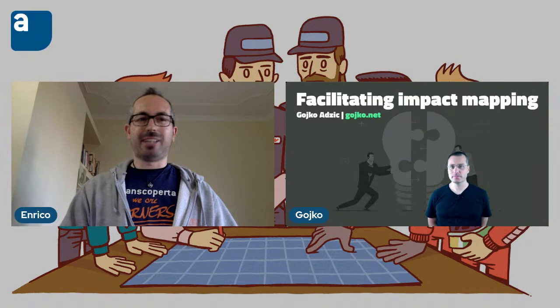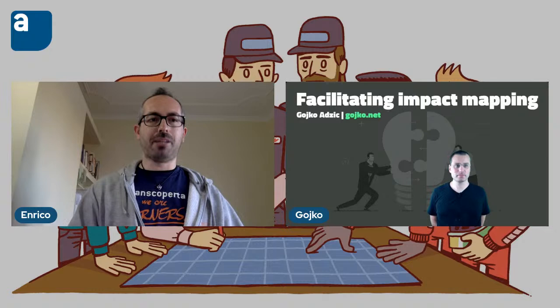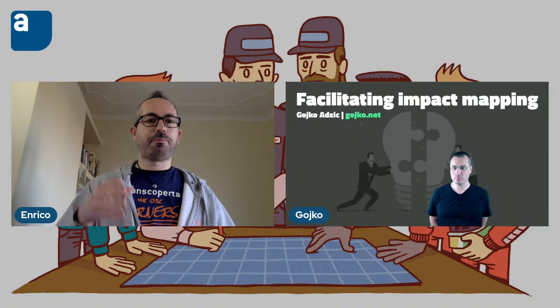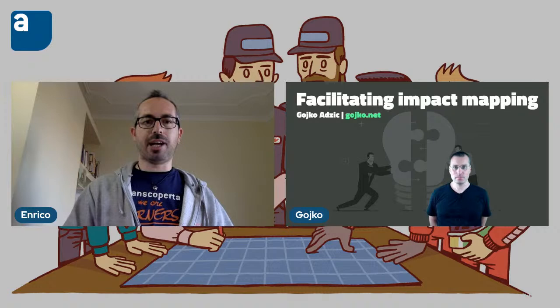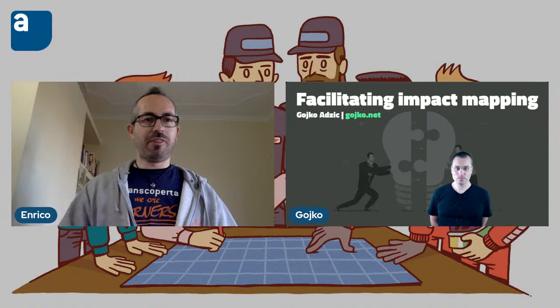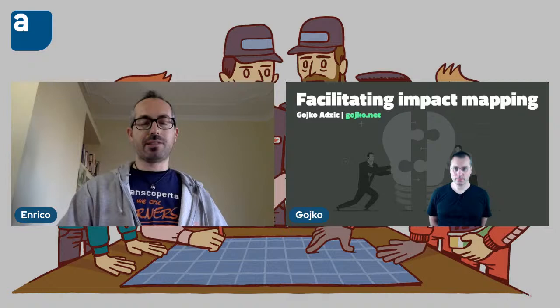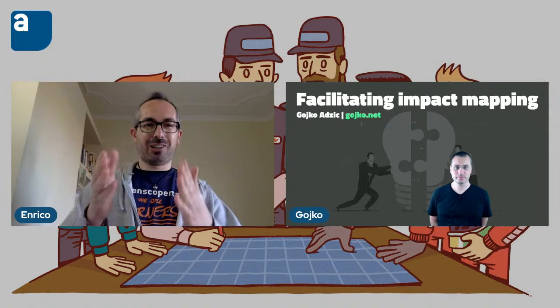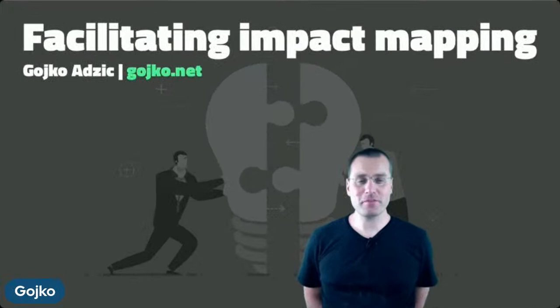Not much I can say about Goiko other than he's a celebrity in the IT world. He's written books like 'Impact Mapping' — we're going to talk about impact mapping this evening — and 'Specification by Example,' and also some on serverless. You have a chance to ask questions to Goiko and to other folks in the chat using the YouTube chat. Feel free to type your questions anytime and we'll stop at some points and at the end of the talk. Goiko, over to you.